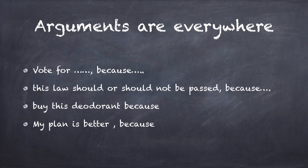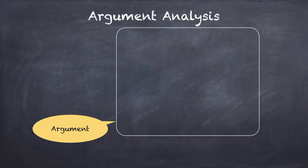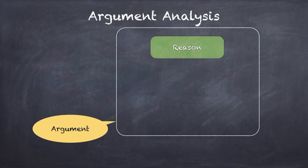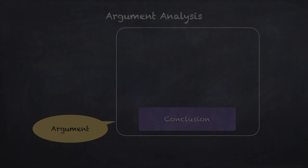Let's get back to the fundamentals. Think of an argument as a box, as one unit, made up of reasons and a conclusion. The reasons add up to and provide support for the conclusion. The reasons and conclusion together are considered an argument. You can also consider the conclusion as the crux of the argument.